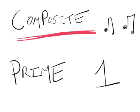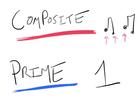A good way to remember: composites are like a composition, like a piece of music — it's got lots of different factors, lots of different notes. And prime just means one or first — Optimus Prime, there's only one of them; the prime minister, there's only one. Prime numbers have only themselves and the number one as factors.